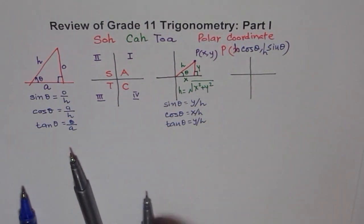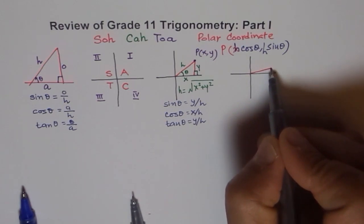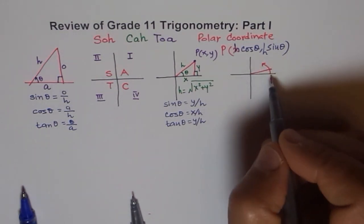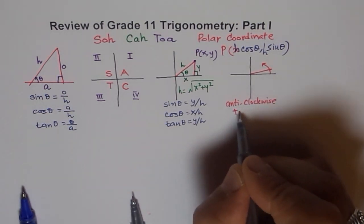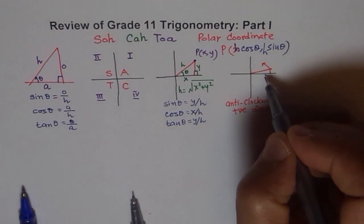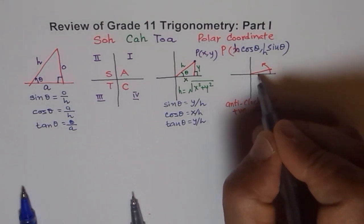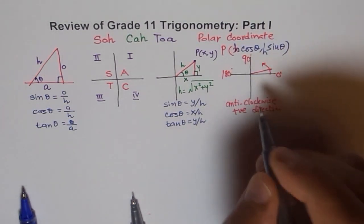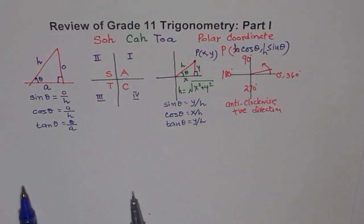Normally we deal with degrees. When making an angle, the initial arm moves to the terminating arm. Anti-clockwise is the positive direction, so minus 30 degrees goes clockwise and plus 30 degrees goes anti-clockwise. Starting from 0°, going around: 90°, 180°, 270°, and back to 360° for one full circle.